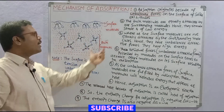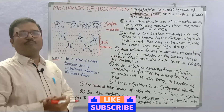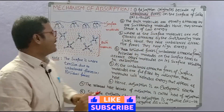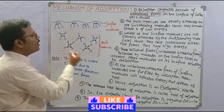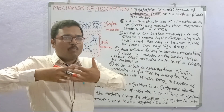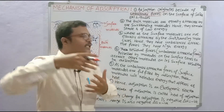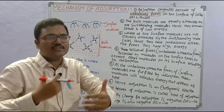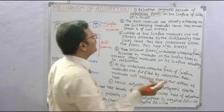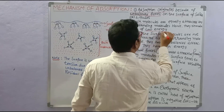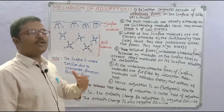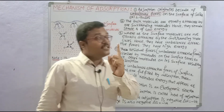In the bulk, the attraction forces are equal. The bulk molecules are equally attracted from all sides. Each molecule is surrounded by other molecules, so they exhibit equal attraction forces. Because of this equal attraction, they are very stable and have very low energy.